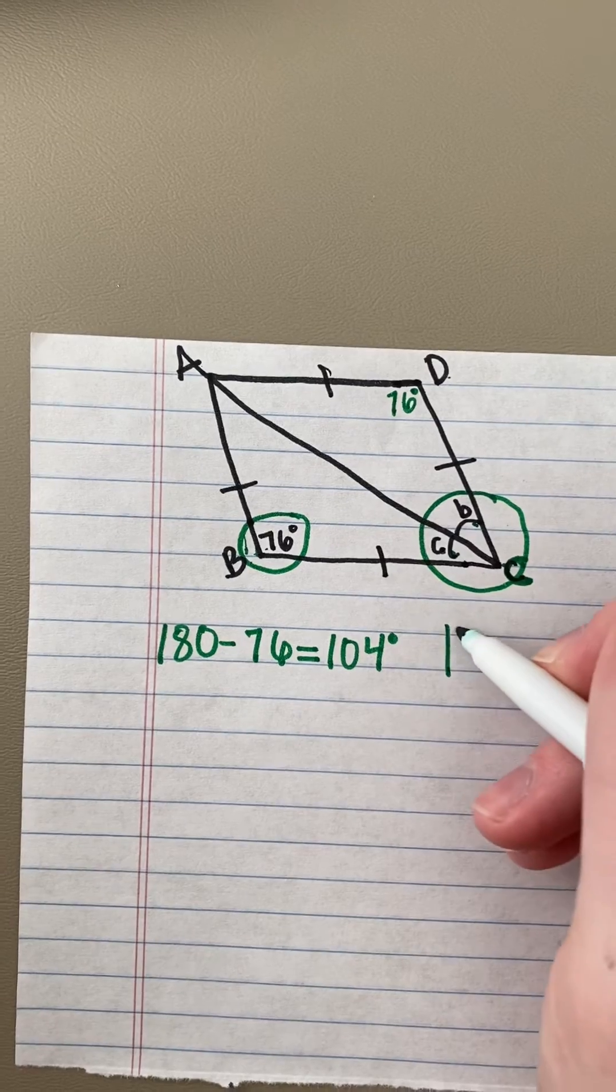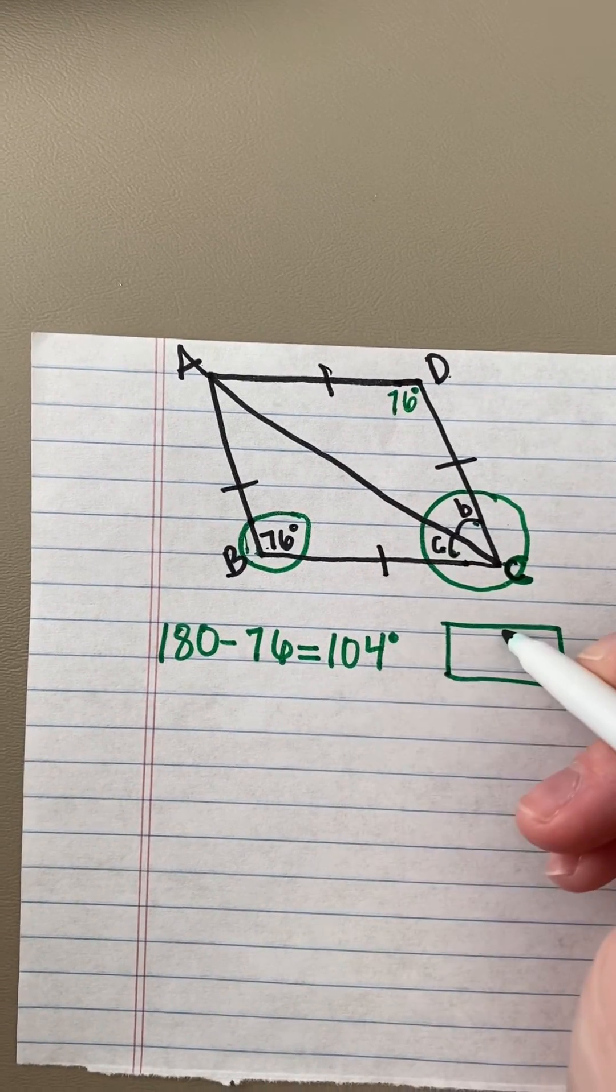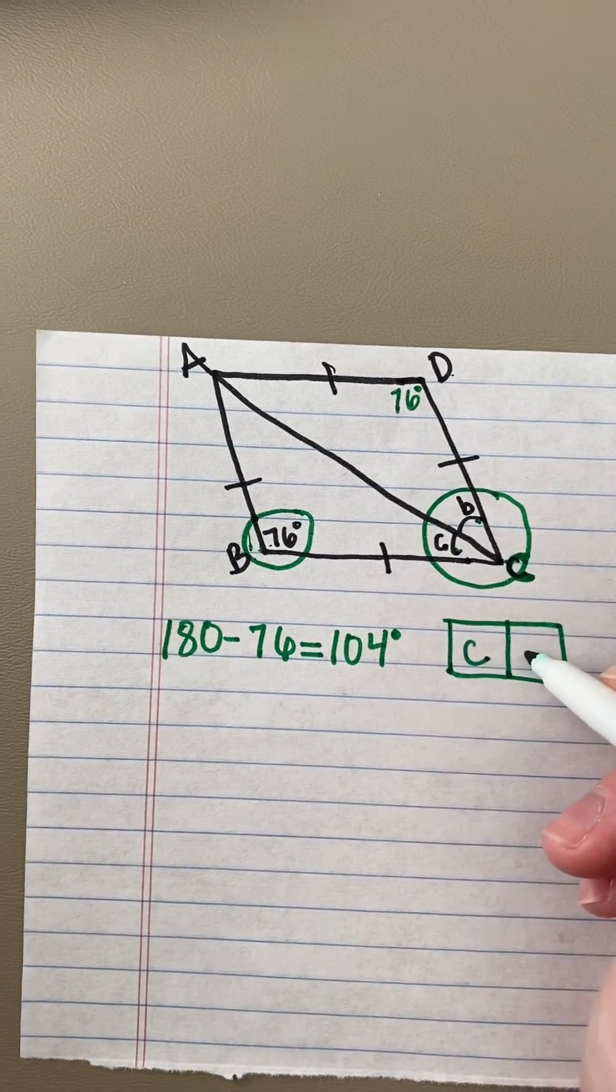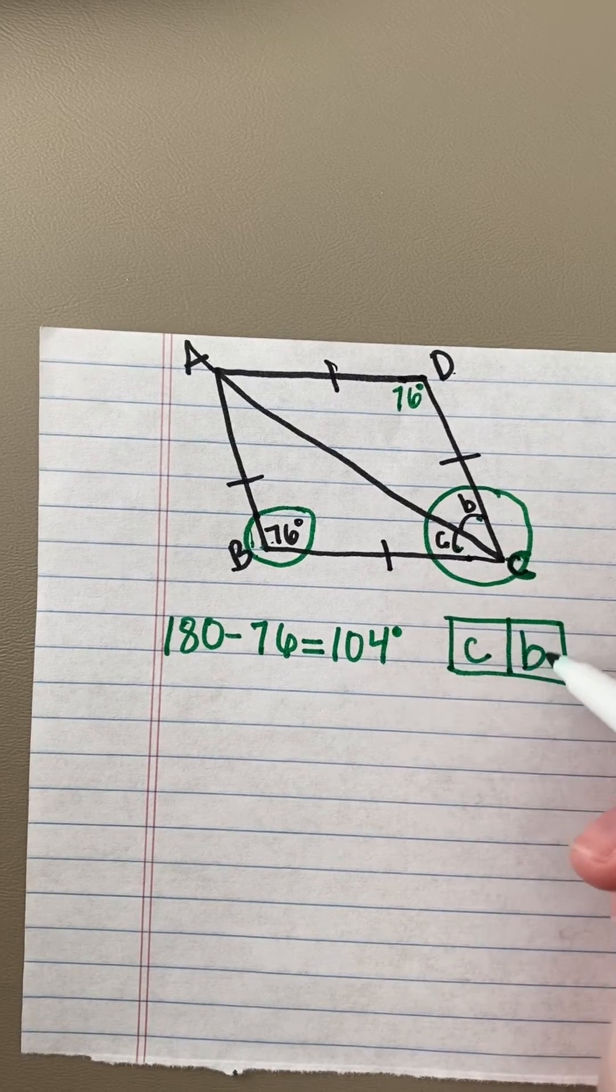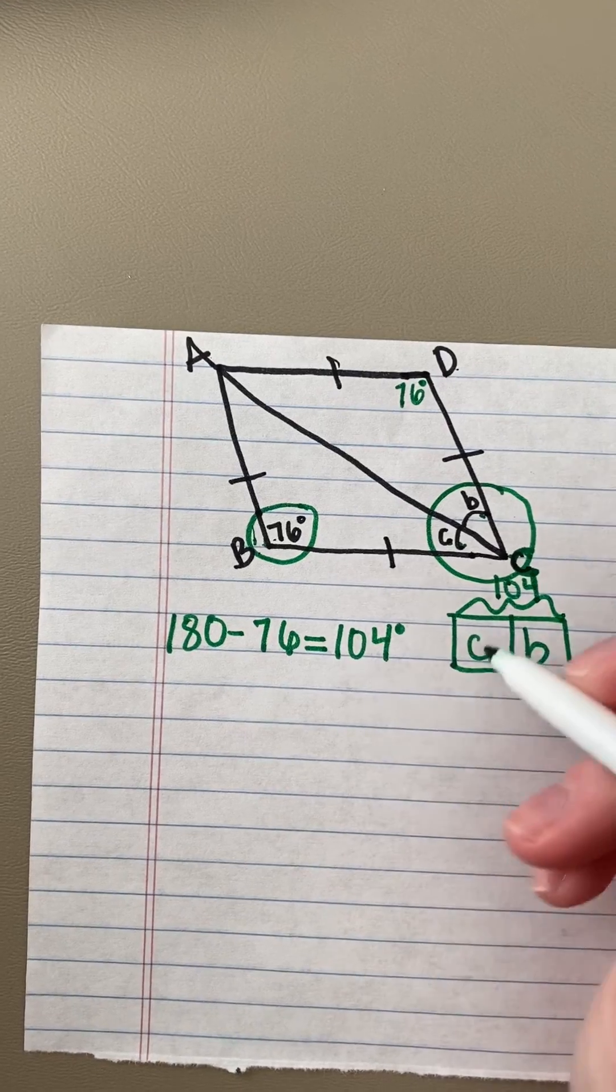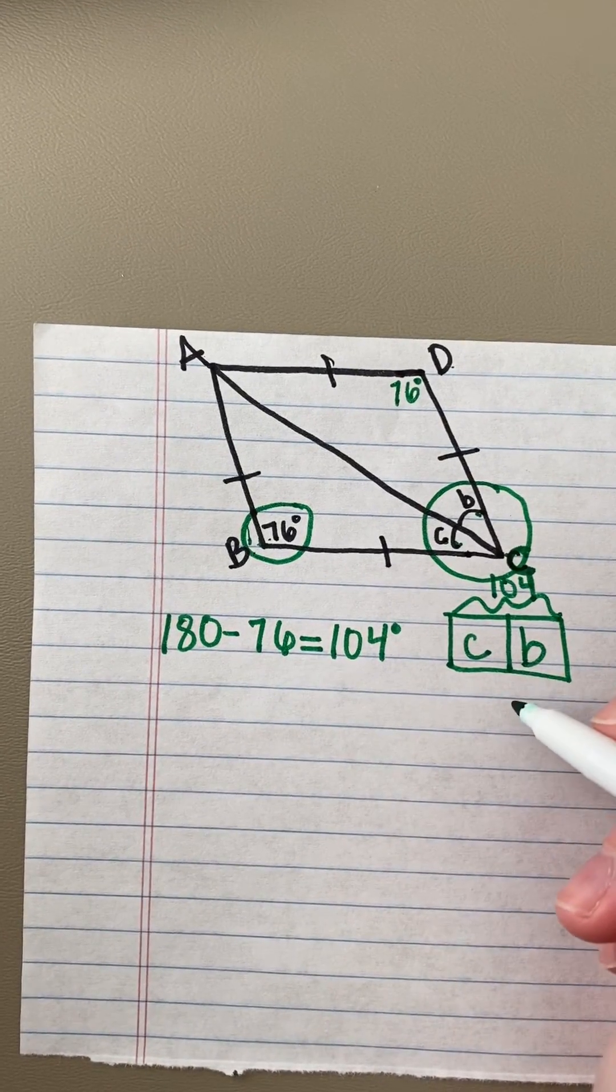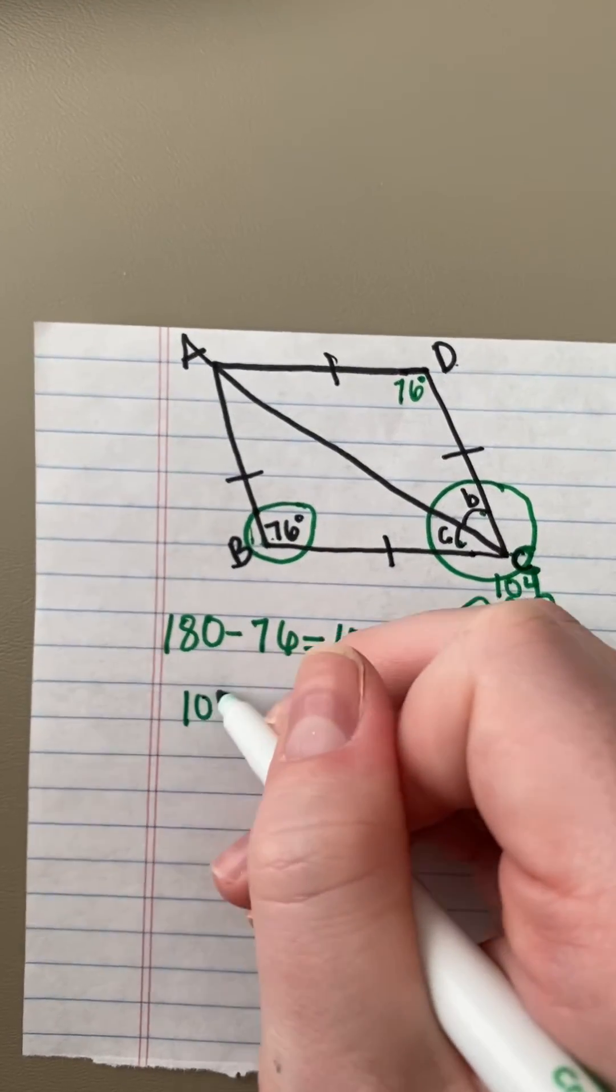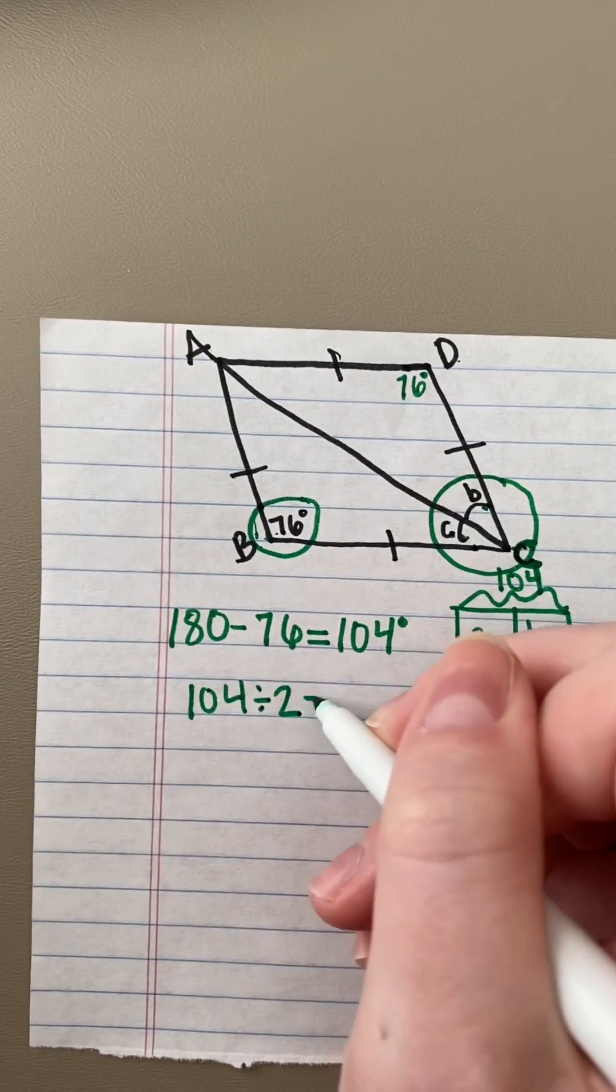So if I were to draw a bar model to help me, I would know that the lowercase C angle and B are equivalent to 104 degrees. And since they are split exactly in half, I need to take 104 and divide it by two.